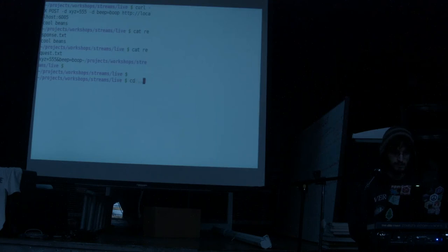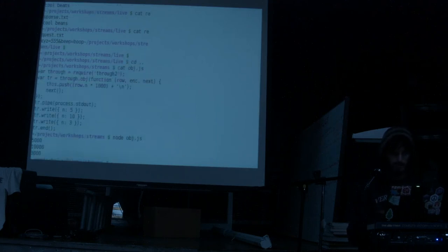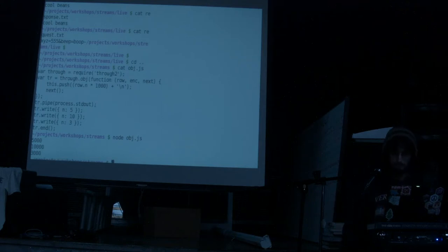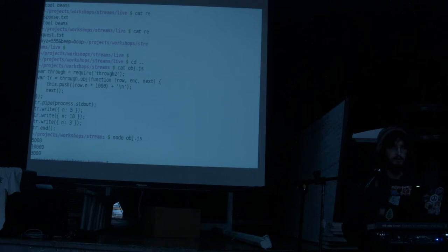I have this program as obj.js. It takes these numbers as input, row.n, multiplies by 5000, converts to a string, and adds a new line. If I run it, we get 5000, 10000, 3000 — simple transformation. You could put as many intermediate steps as you like.